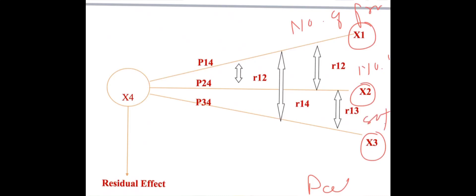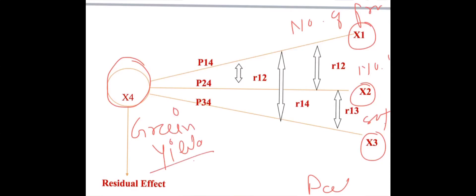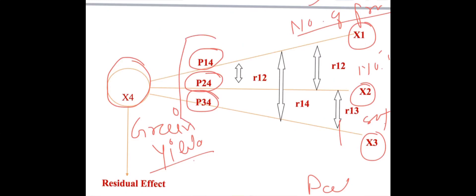The dependent variable x4 is, for example, green yield or seed yield. Yield is the dependent character and x1, x2, x3 are the independent variables. When x1 — number of primary branches — directly affects green yield, p14 indicates the direct effect of x1 on x4. Similarly, p24 means x2 is directly associated with x4, and p34 means x3 is directly associated with x4. These are the estimates of direct effect of variables x1, x2, and x3 on the dependent variable x4.